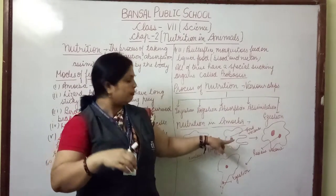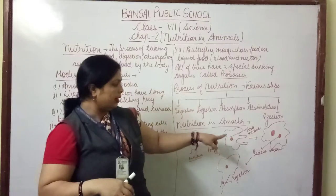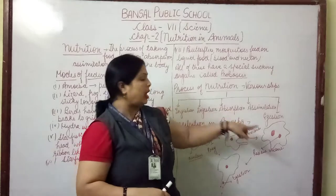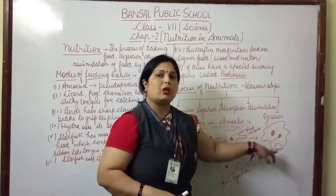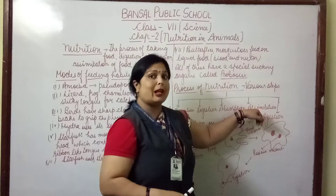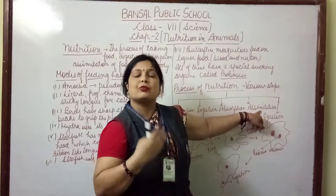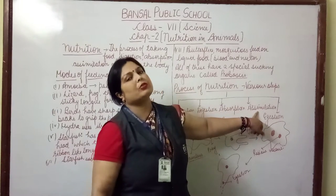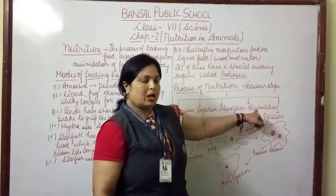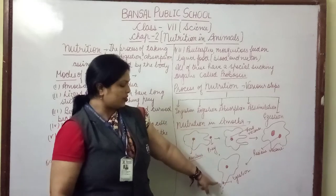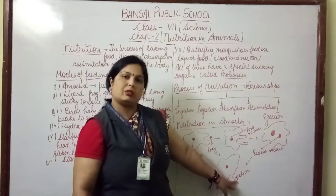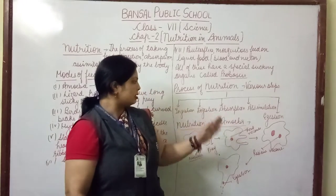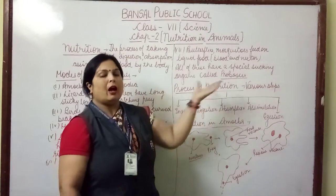When digestion is complete, absorption takes place — the digested food diffuses into the whole body and is utilized for the growth, repair, and reproduction of the amoeba body. This process is known as assimilation. Undigested food is removed from the body with the help of a contractile vacuole — this process is known as egestion.